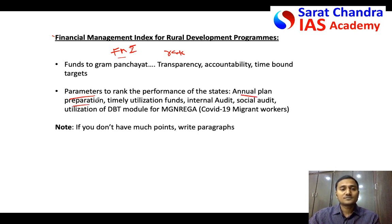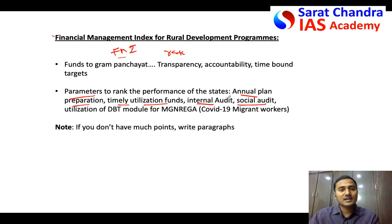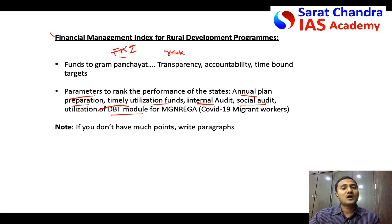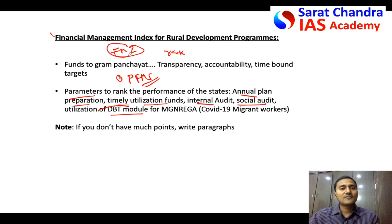The rural development ministry recently introduced the FMI to rank states based on how well they manage and utilize funds. The parameters used for ranking include: whether state governments are preparing proper annual plans, whether funds are utilized in a timely manner, whether internal audits are conducted to verify proper utilization, whether social audits are conducted by stakeholders, and whether the DBT module is being utilized — since direct benefit transfer is present in several government schemes. The question asks how FMI is using PFMS.